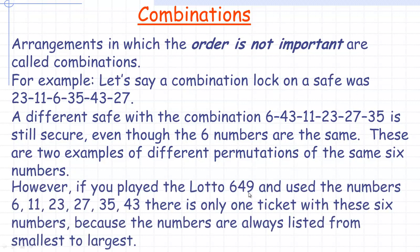Now, let's say you're playing the Lotto 649. If you're not from Canada, the Lotto 649 is a lottery where you pick six numbers from 1 to 49. You can fill it out on a ticket, or you can get the machine to generate a randomly chosen group of six numbers for you. Let's say you decide to play the numbers 6, 11, 23, 27, 35, and 43. There's only one ticket with those six numbers, because they're always listed in order from smallest to greatest. Two people could buy tickets with the same numbers on them, but they're not considered two different combinations — those two people would share the prize.